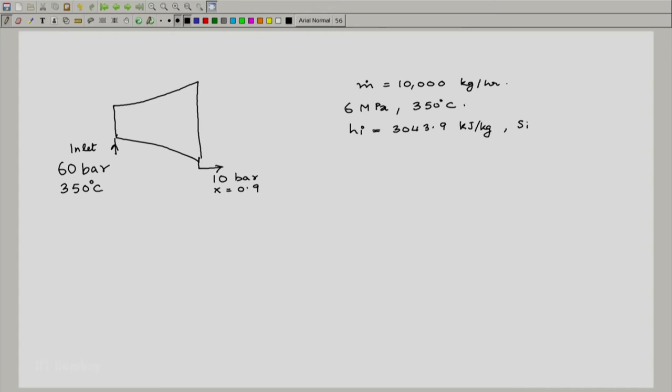We look up the superheated tables at 6 mega Pascal, 350 degrees centigrade and we get that h i should be equal to 3043.9 kilojoule per kg, and s i is equal to 6.3357 kilojoule per kg Kelvin. This is at inlet.